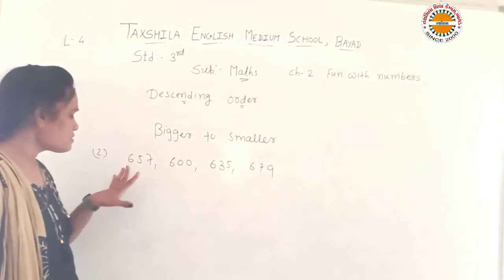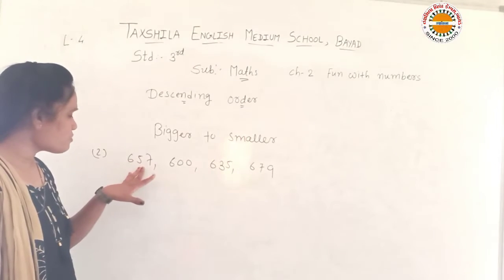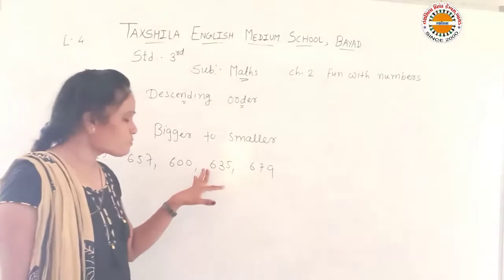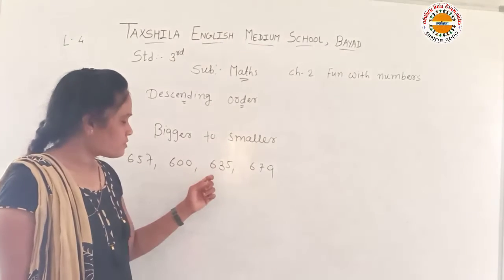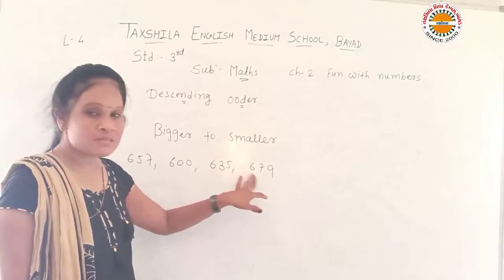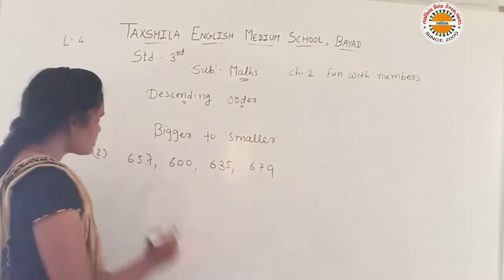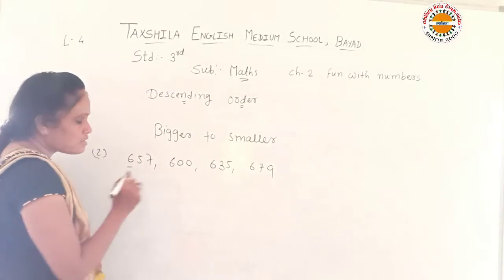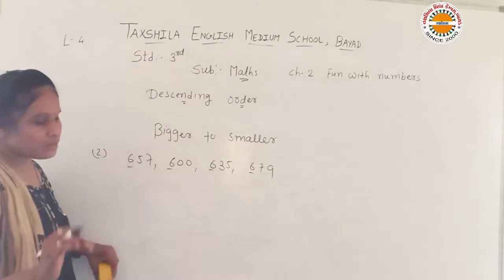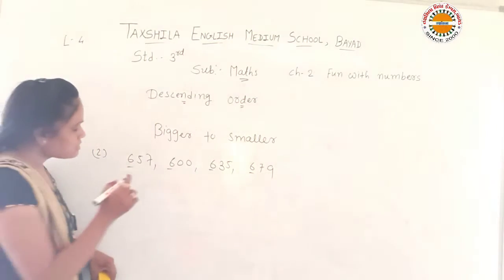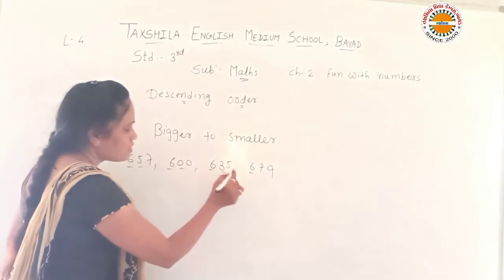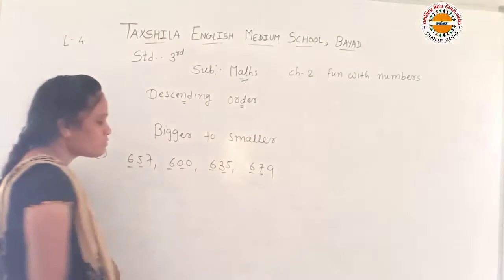Which number is this? This number is 657. Which number is this? 600. Which number is this? 634. Which number is this? 679. Now, the hundreds digit for all these numbers is 6. Now we are going to look at the tens digit — we have 5, 2, 3, 1.